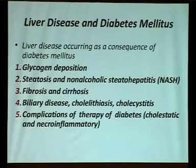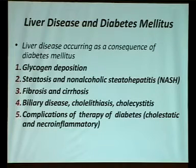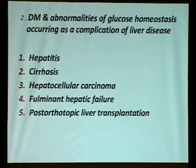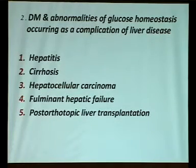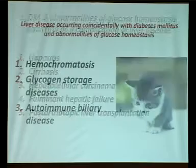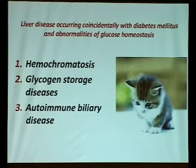Liver disease occurring as a consequence of diabetes includes: glycogen deposition, steatosis and non-alcoholic steatohepatitis, fibrosis and cirrhosis, increased incidence of biliary disease including cholelithiasis and cholecystitis, and complications of diabetes therapy. The second group covers diabetes and abnormalities of glucose homeostasis as a complication of liver disease — like hepatitis, cirrhosis, hepatocellular carcinoma, fulminant hepatic failure, and post-orthotopic liver transplantation. The third group includes coincidental conditions like hemochromatosis, glycogen storage disease, and autoimmune biliary disease.